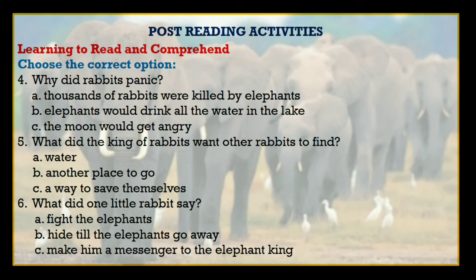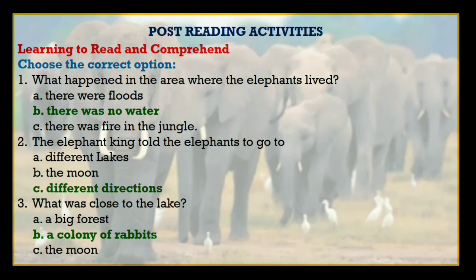If you clearly understood the story, you can easily solve these questions. Hurry up, do it fast. Ok, time up — now match your answers. First question: what happened in the area where the elephants lived? Options are: there were floods, there was no water, there was fire in jungle. And the right answer is: there was no water where the elephants lived.